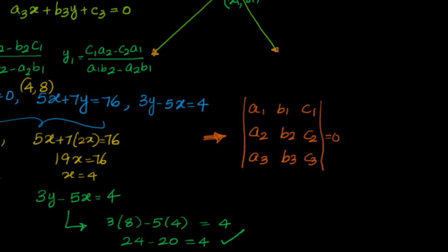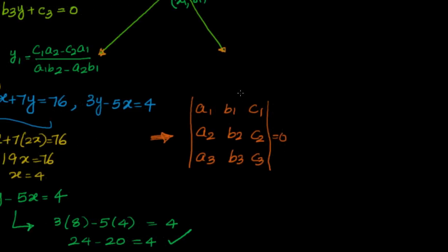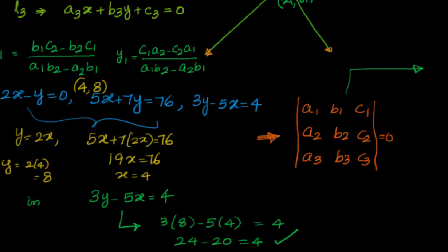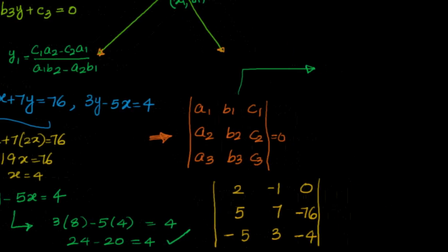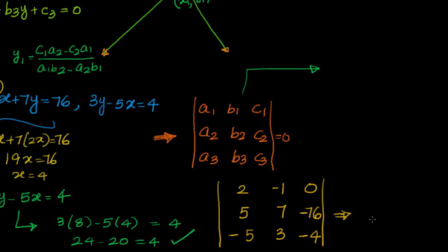Now, how to solve the same problem using the determinant representation? We substitute the values directly. We have a1 = 2, b1 = −1, c1 = 0. Writing the equations in the form ax + by + c = 0: for the second line, c becomes −76, giving coefficients 5, 7, −76; for the third line, −5x + 3y − 4 = 0. The determinant of this matrix should equal zero if all three lines are concurrent.